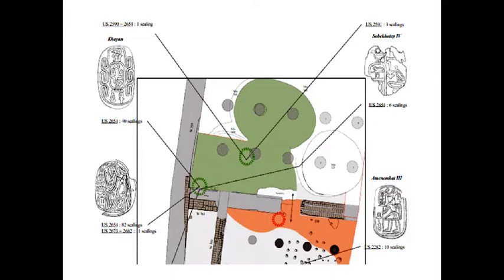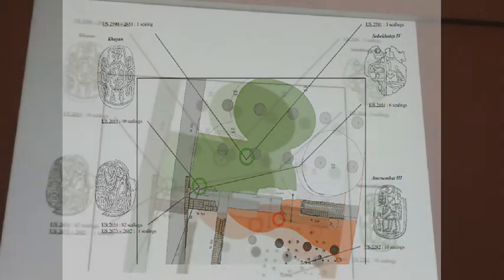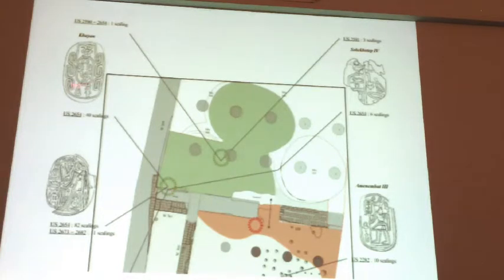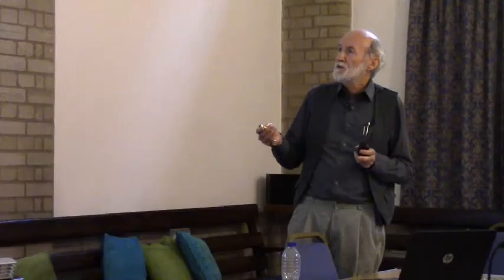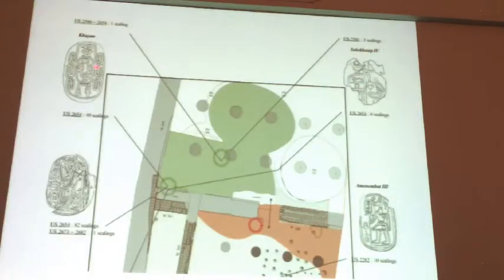On the floor of this last use as an administrative building, there were lots of sealings amongst other things and pottery, apparently many swept into a corner. These sealings include sealings with the cartouche of Khyan and sealings with the cartouche of Sobekhotep IV: six sealings from Sobekhotep and 40 sealings from Khyan, all in use apparently at the same time.